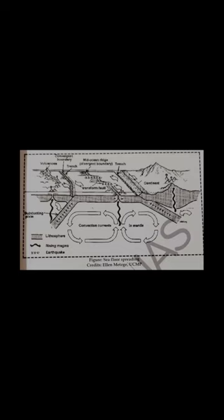Plate Tectonic Theory (PTT): In 1967, McKenzie and Parker, and also Morgan, independently collected available ideas and came out with the concept termed plate tectonics. Plate tectonics is the movement of lithospheric plates due to internal forces emanating from Earth's interior. The lithosphere, consisting of crust and top mantle, is broken into a network of distinct plates — lithospheric plates. A lithospheric plate is a massive, irregularly shaped slab of solid rock, generally composed of both continental and oceanic lithosphere. According to plate tectonic theory, Earth's lithosphere is divided into seven major and some minor plates.